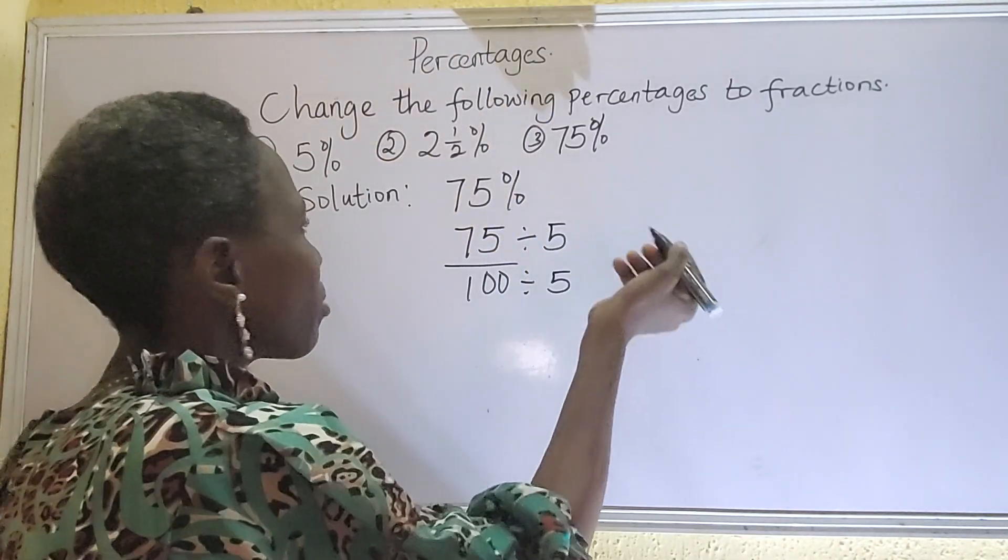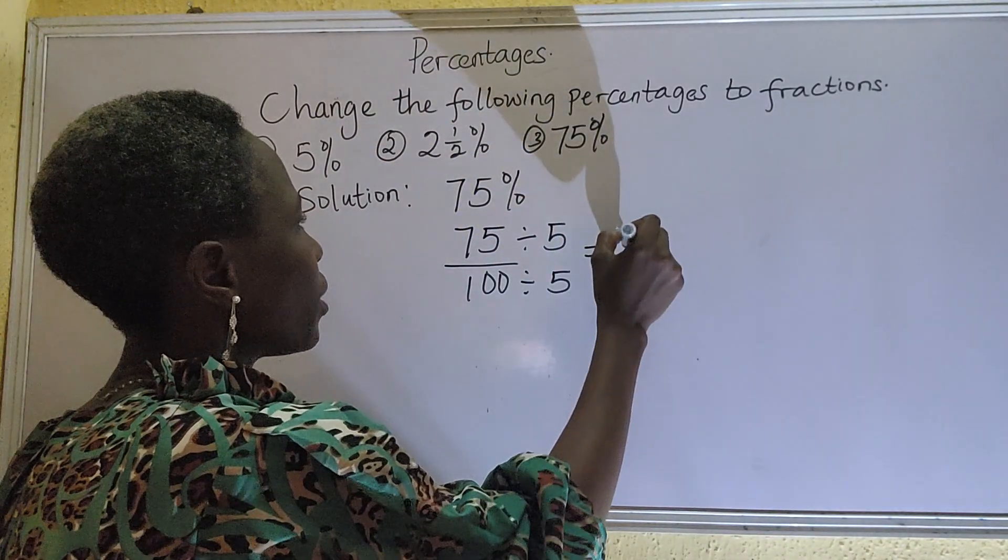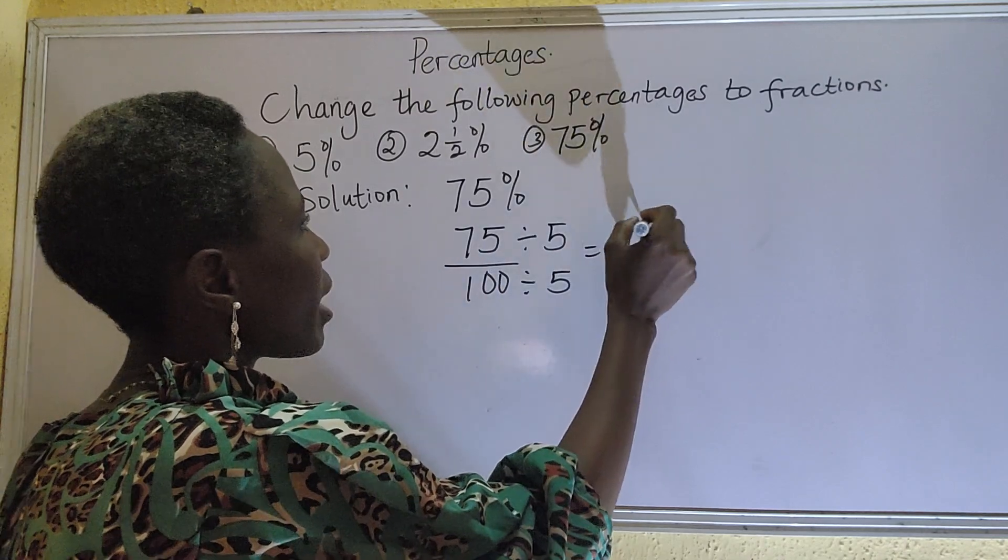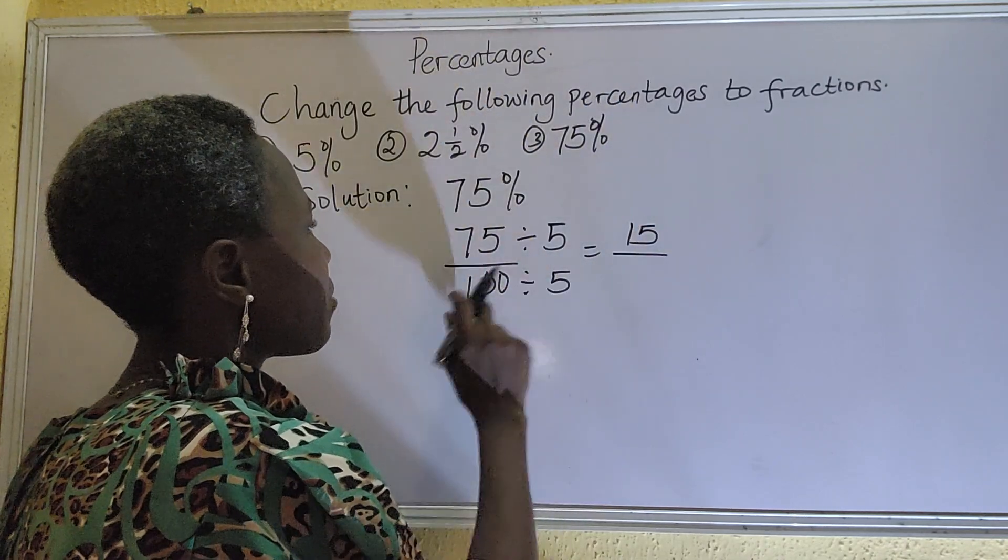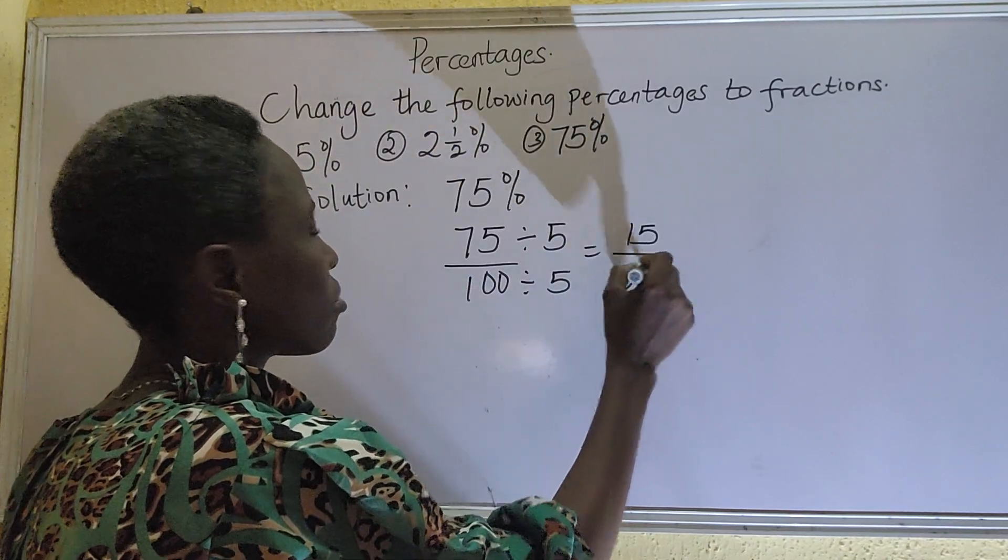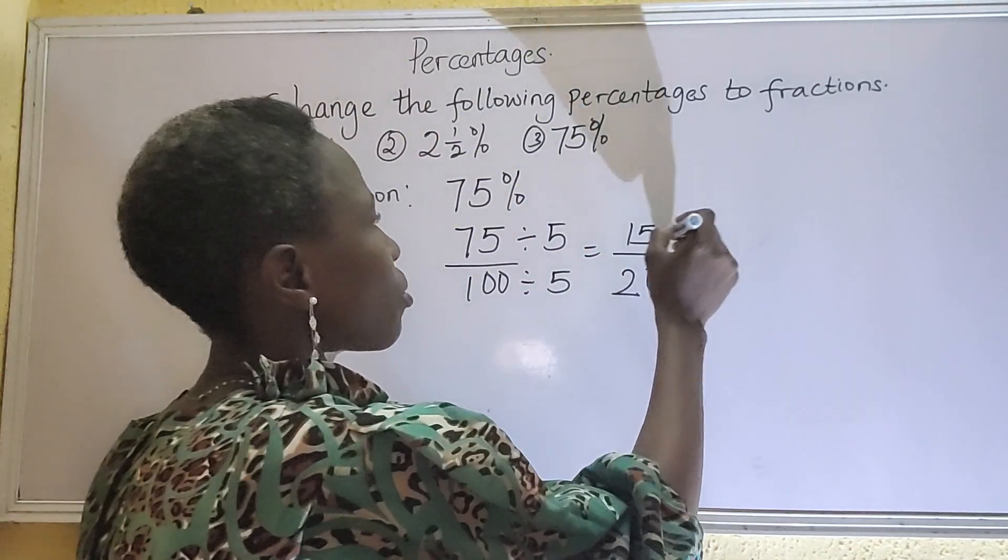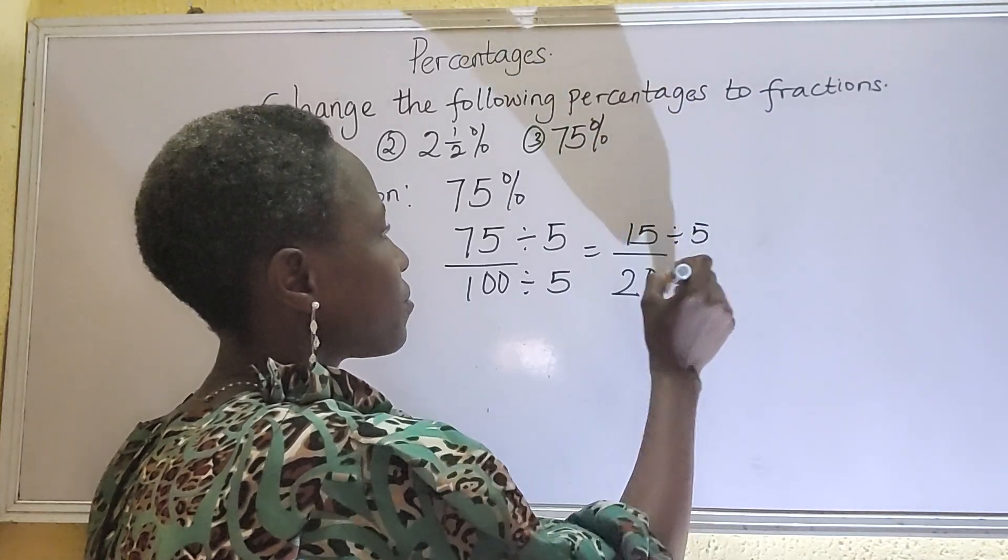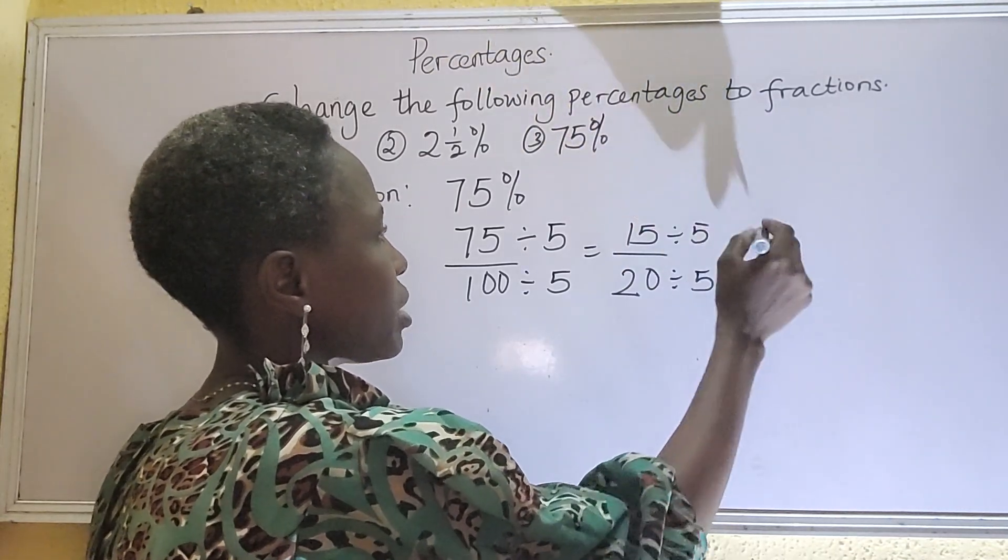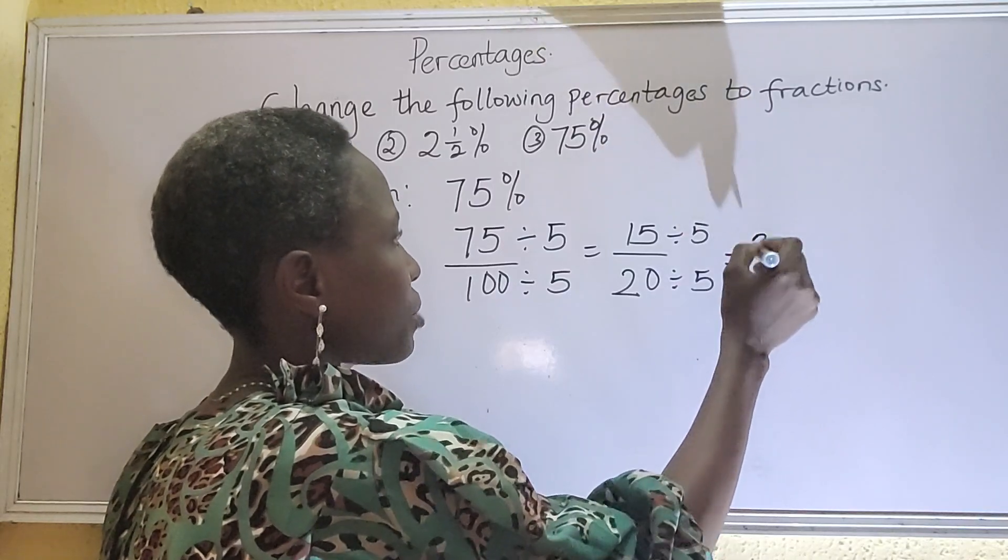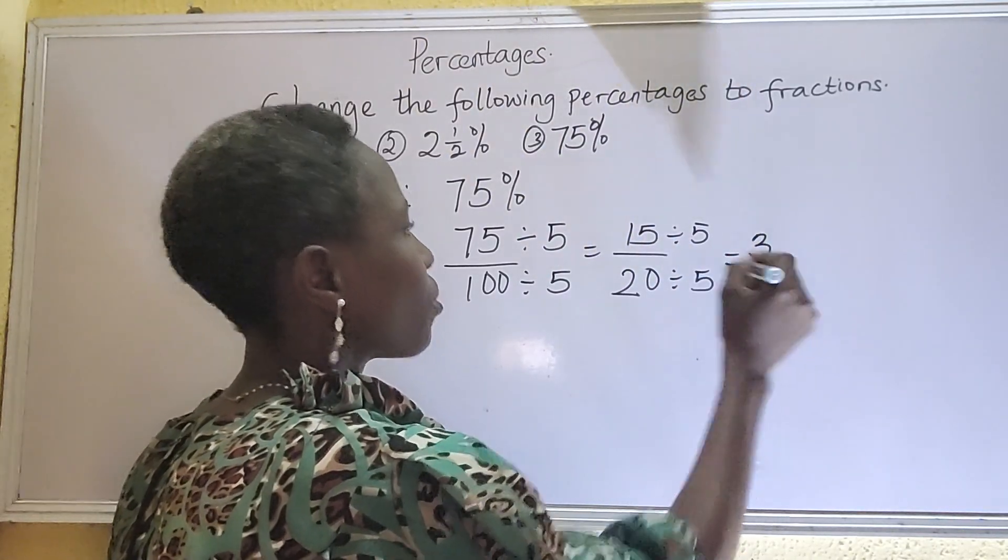So what do we do? We divide both sides. 5 can divide both sides. We divide to the lowest term. So 5 in 7 that's 1, in 25 that's 5 over 5, in 10 that's 2. Yes, it can still divide it further, so we'll be dividing still by 5. This is going to be 15 divided by 5 that's 3, 20 divided by 5 that's 4. So 75% to fraction is 3 over 4.